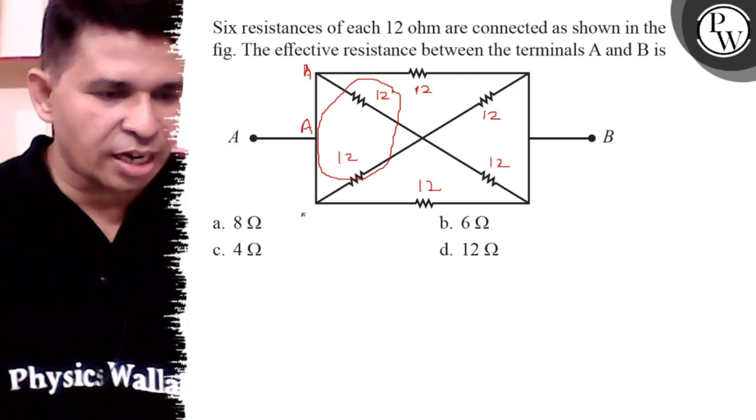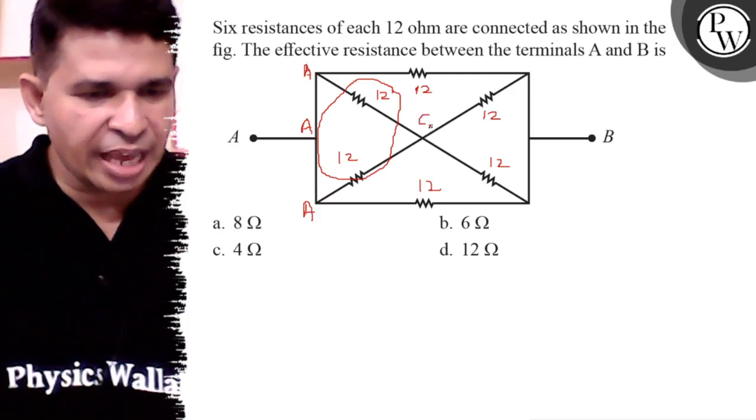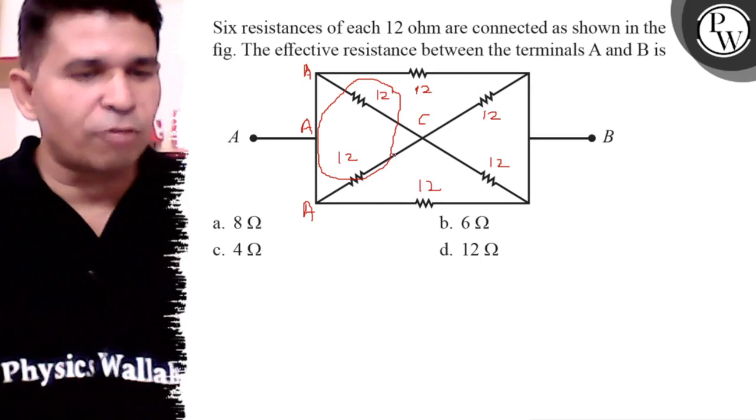These have equal potential, these are short circuit points. So between A and C these 12, 12 are in parallel. And these two 12, 12 ohm are also in parallel.